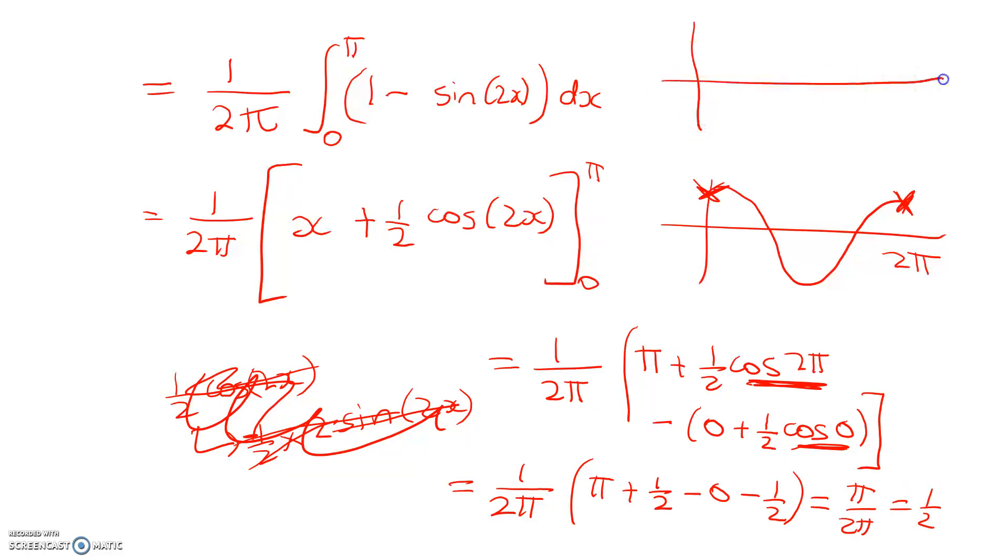Now think back to where we started. We had a nice graph of that function that looked like that. It went from 0 to 1, so our answer makes good sense. The average value over that domain, over that interval, is equal to 1 half.